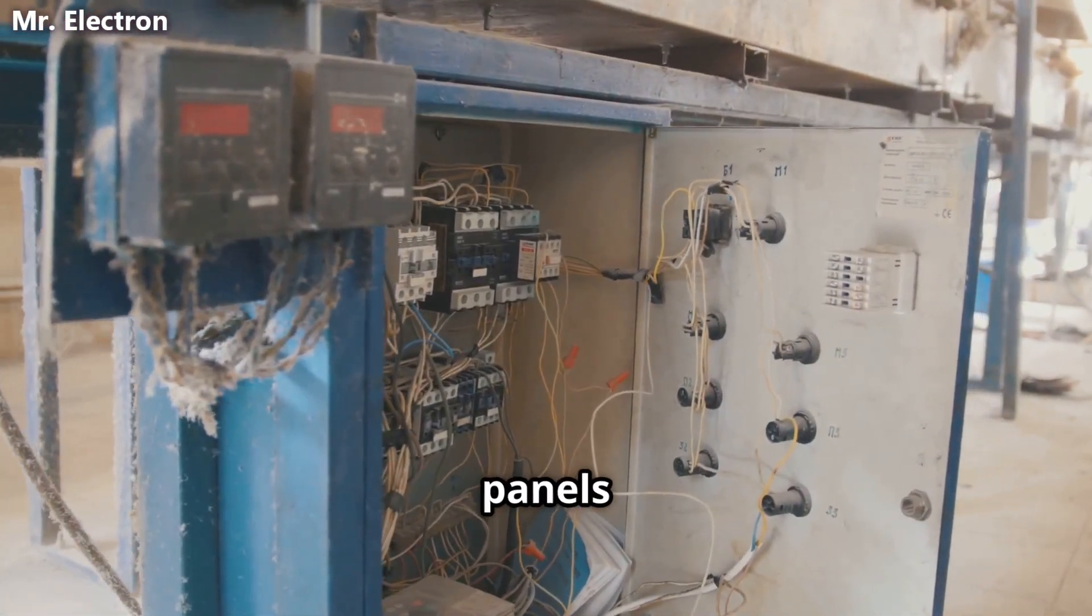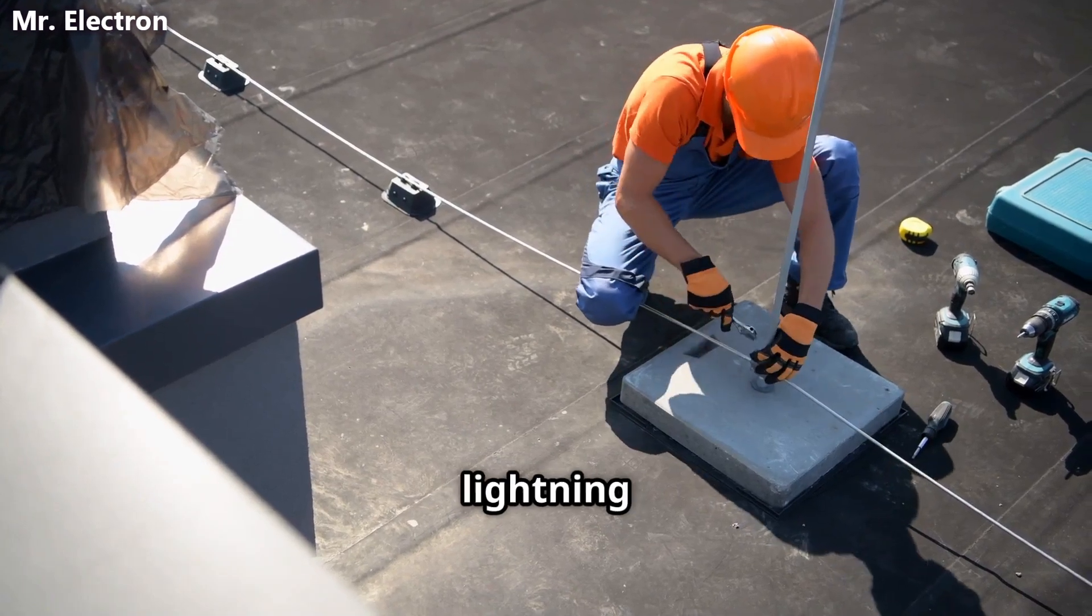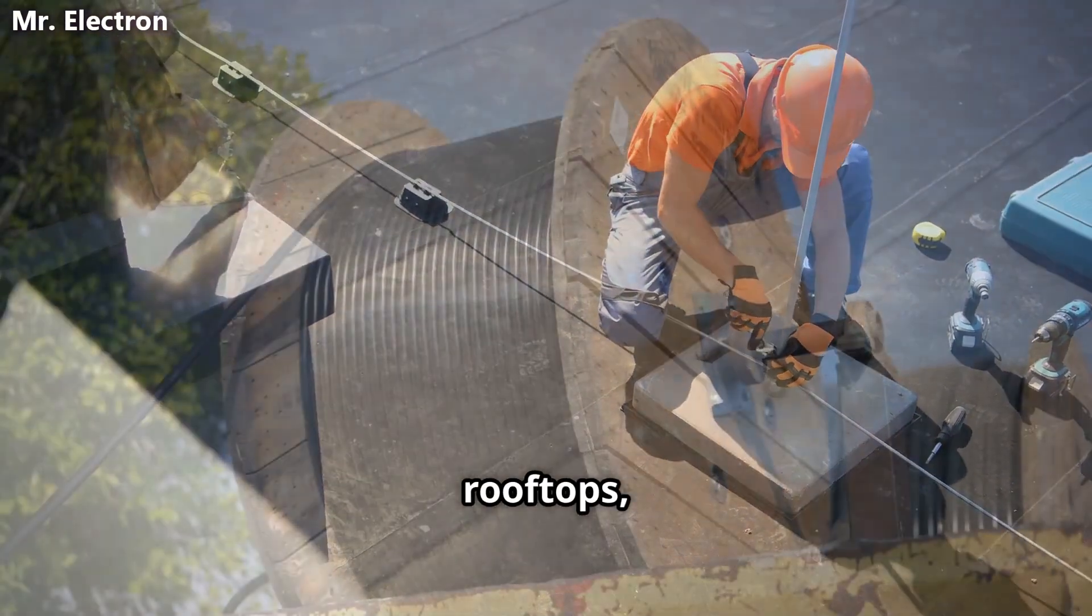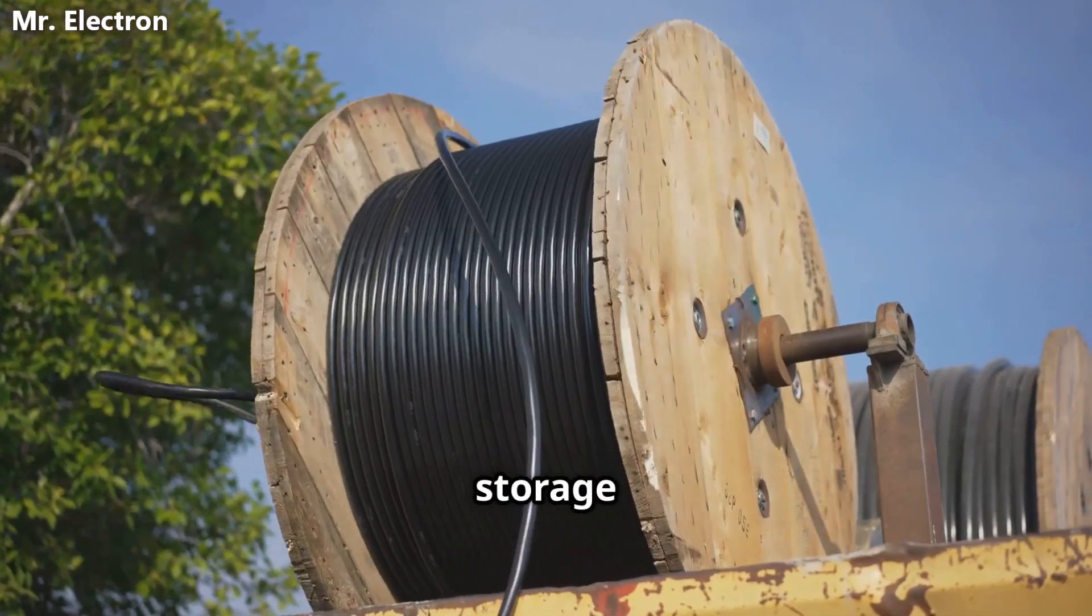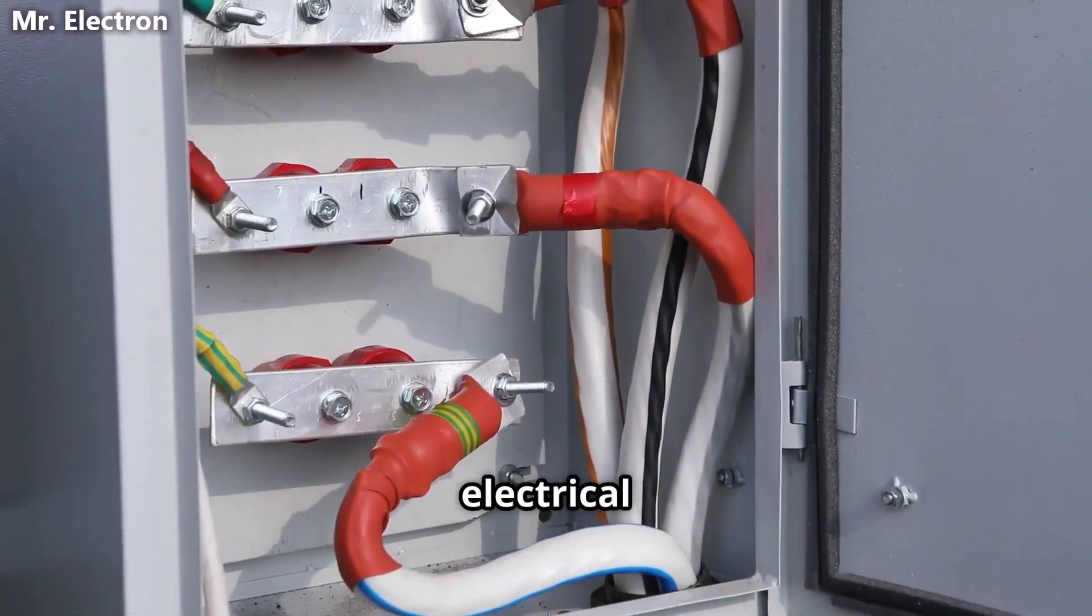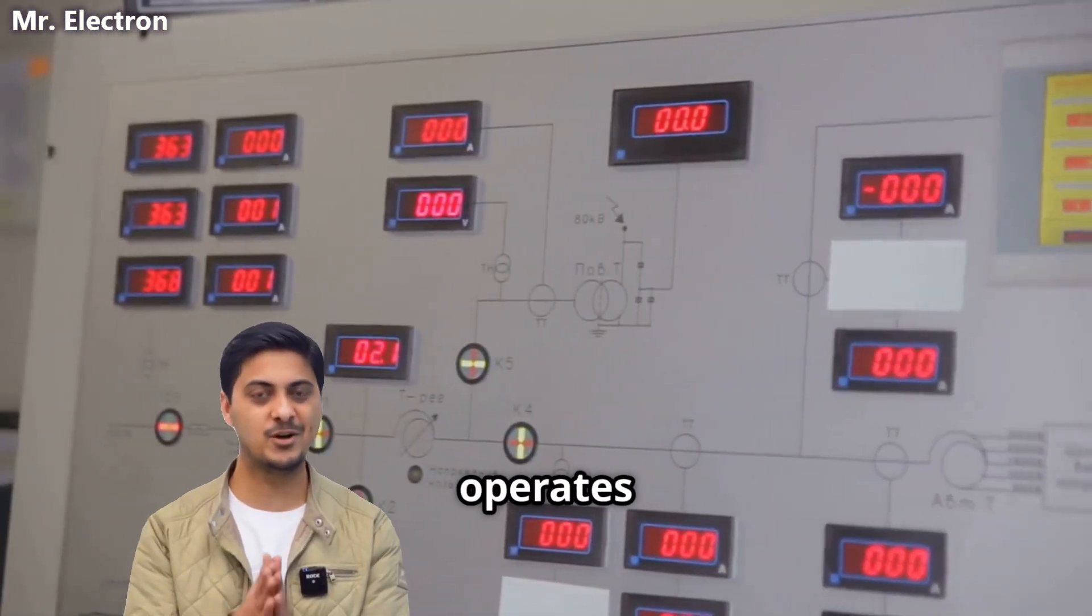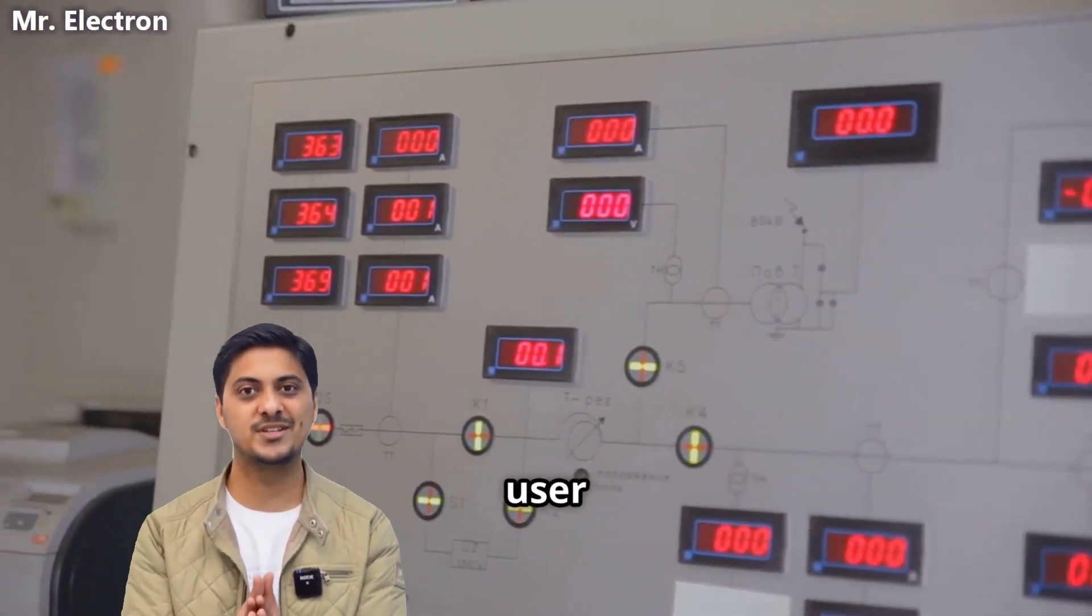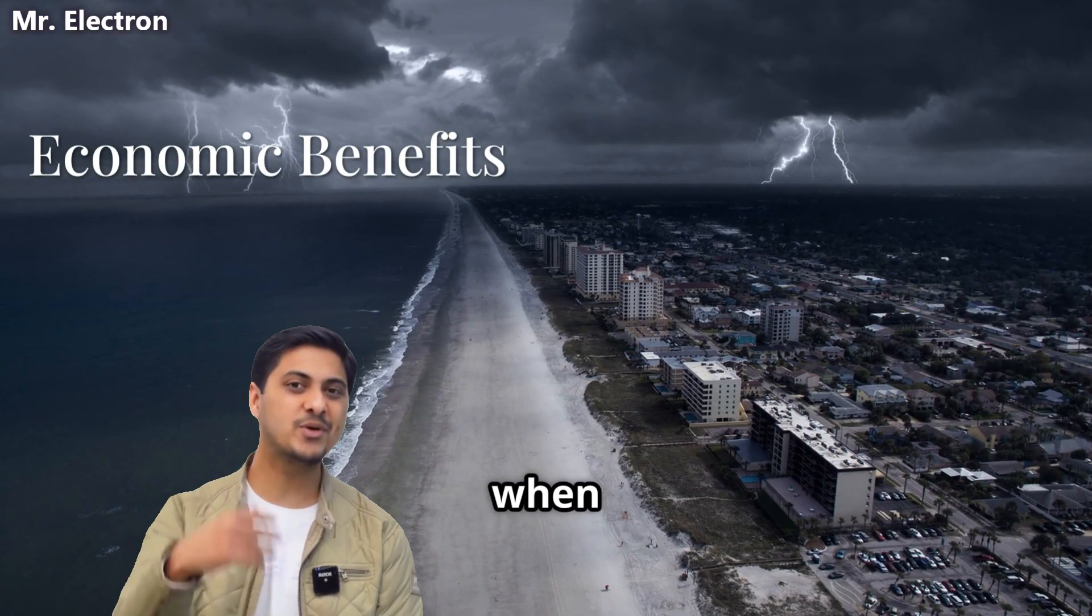Once the supercapacitors reach full charge, a standard grid-tie inverter kicks in automatically, providing electricity to the building and then to the grid just like solar panels do today. Government-certified technicians install the lightning rod system on building rooftops, run heavy-duty cables down to basement-mounted transformer and storage equipment, and connect everything to the building's main electrical panel through a standard grid-tie setup.